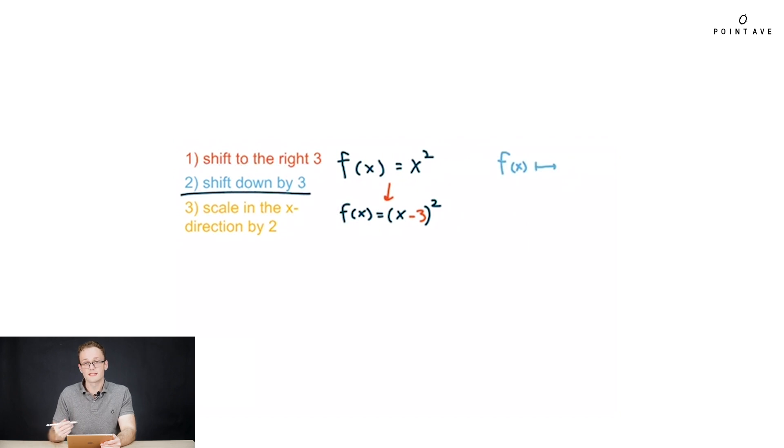Onto the next shift, shifting down by 3. This is a y shift, so we need to subtract 3 outside of the function f of x close parentheses minus 3. This gives us the full function so far of x minus 3 parentheses squared minus 3. Now, after doing it step by step by step, onto our last transformation, scaling in the x direction by 2.